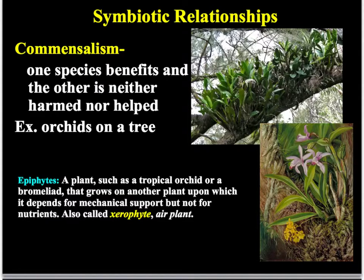The first one is called commensalism. Commensalism is what happens when one species benefits from the relationship and the other species is indifferent — it's not harmed, it's not helped, it just exists. Here's a picture of an orchid living between the branches of a tree. The orchid isn't taking anything away from the tree; it's just using the tree to get closer to sunlight. The orchid benefits and the tree is just there — not harmed, not helped.